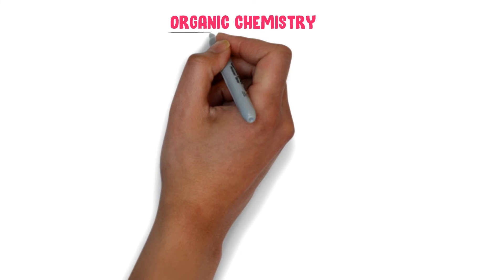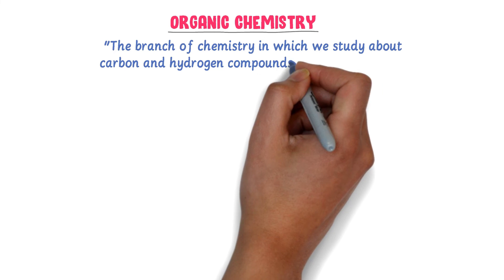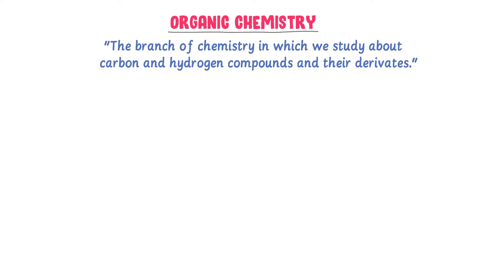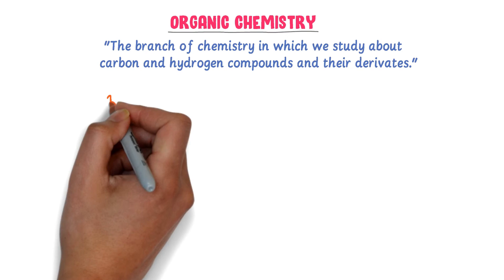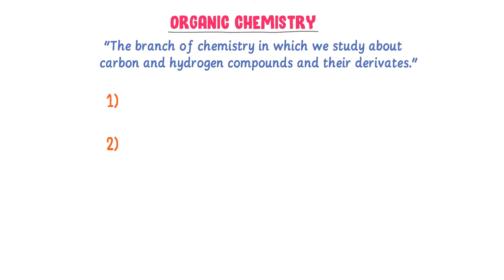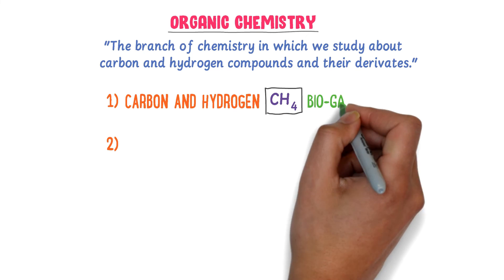Now, what is organic chemistry? The branch of chemistry in which we study about carbon and hydrogen compounds and their derivatives is called organic chemistry. For example, we study two areas in organic chemistry. Firstly, we study carbon and hydrogen compounds like CH4, which is commonly known as biogas.